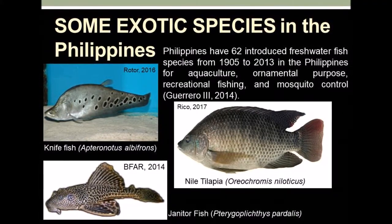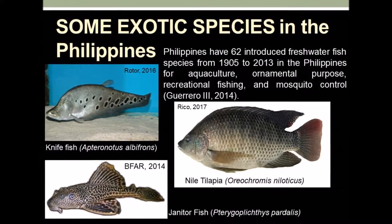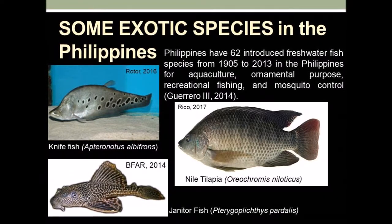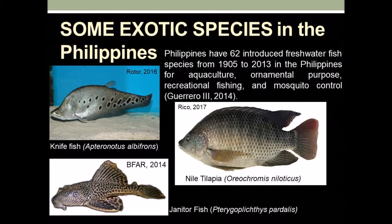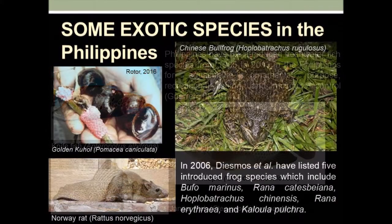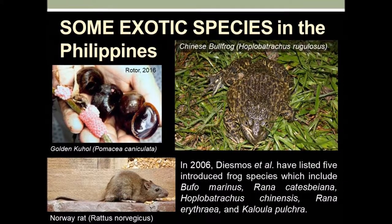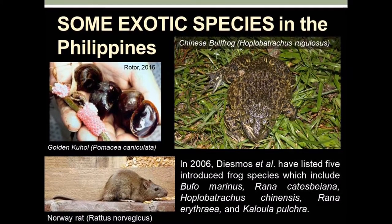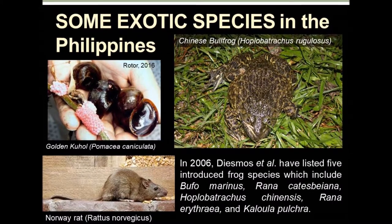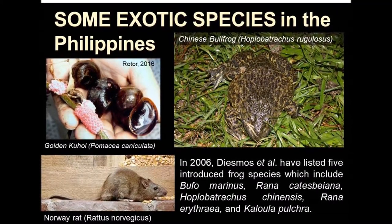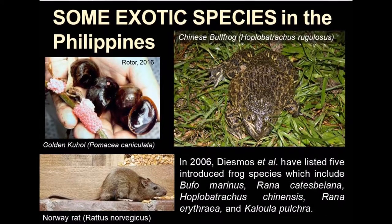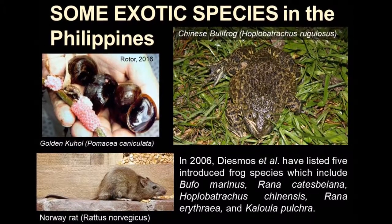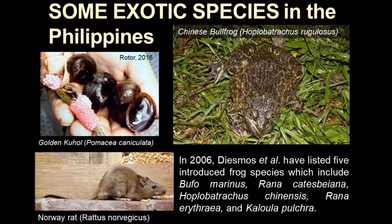Some of the most famous are the janitor fish in Marikina River and other adjacent water bodies, and the Nile Tilapia all over the Philippines, which were cultured for food but can already be found in different aquatic ecosystems. Other exotic species include golden snail, which was introduced for food, the big house rats that are pests possibly accidentally introduced through cargo ships, and the big Chinese bullfrog that, according to some farmers in southern Palawan, doesn't only eat insects but also eats smaller native frog species. Hence, this disrupts the natural food chain and threatens our native species.